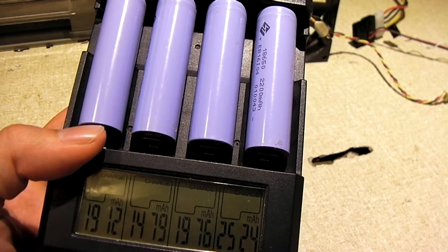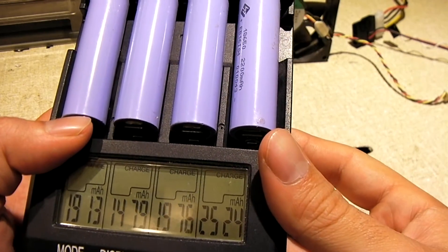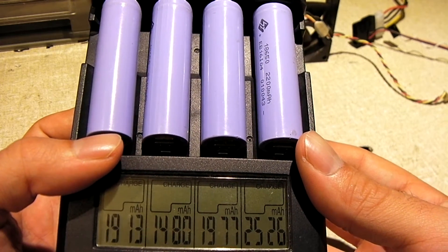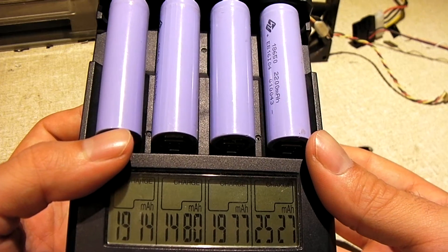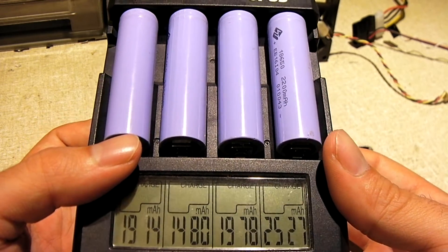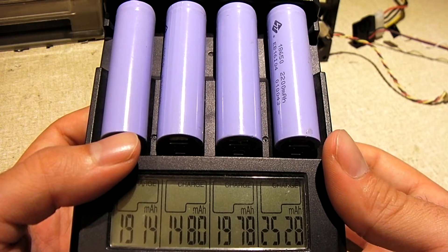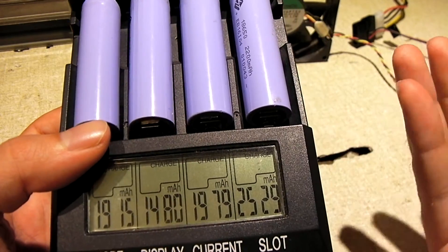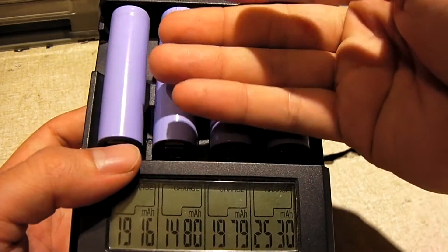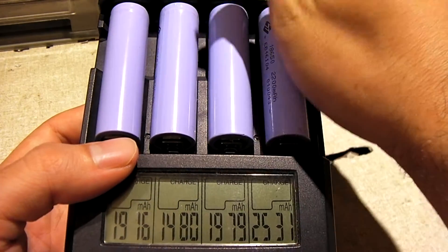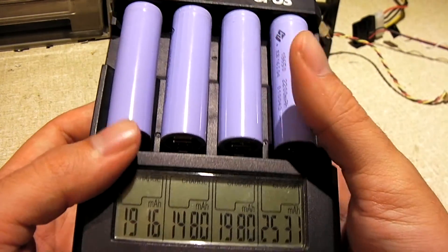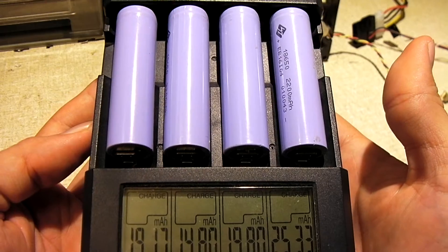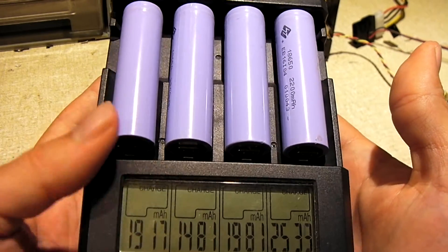For lithium ion cells to get hot when charging is a sign of something not going too well with the cell. Now nickel metal hydride and nickel cadmium, they're a little different. It's normal for them to get pretty toasty when charging. Once they get closer to a full charge, a lot of times they will disperse the extra power as heat. Whereas on lithium ion, these charge off of a constant current, constant voltage charge cycle.